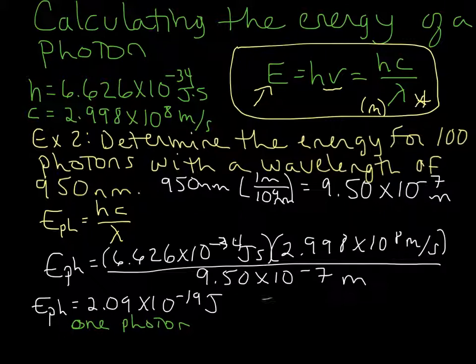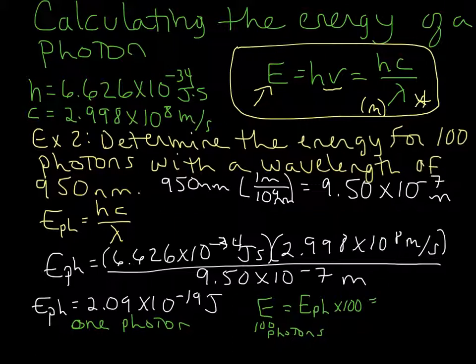So our energy for our 100 photons of that wavelength is going to be equal to the energy of our photon times 100. So if we go ahead and plug that in, 2.09 times 10 to the negative 19 joules times 100.